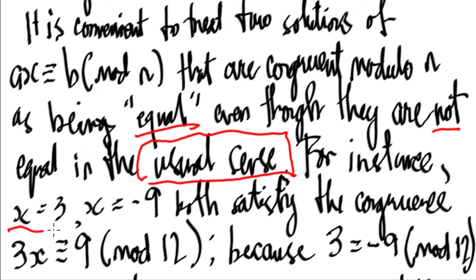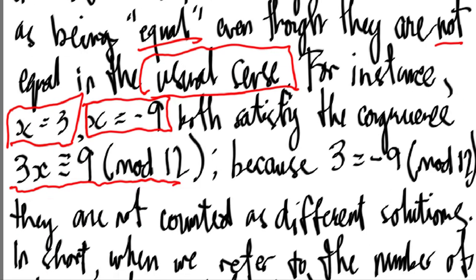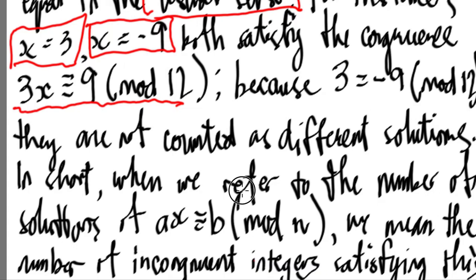For instance, notice x equals 3 and x equals minus 9 both satisfy the congruence 3x is congruent to 9 mod 12. So if we're going to substitute it there...